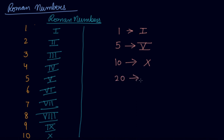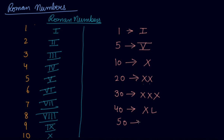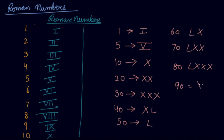20 will be two times X — meaning 10 and 10 is 20. If I have to write 30, I will write three times X. If I have to write 40, I will write XL. 50 is L, 60 is LX, 70 is LXX, 80 is LXXX, 90 is XC, and 100 is C.